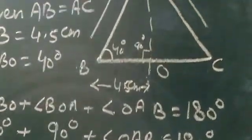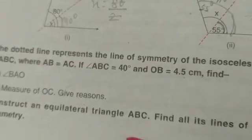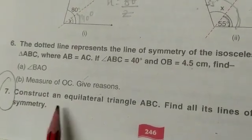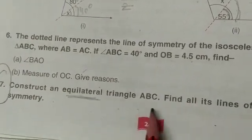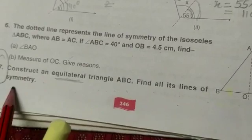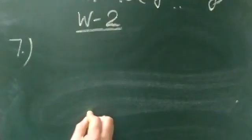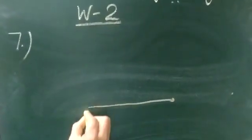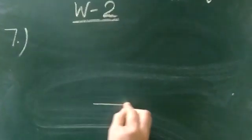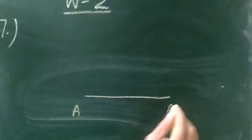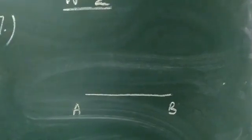After that, question number 7: construct an equilateral triangle ABC and find all its lines of symmetry. Equilateral means having three equal sides. To form the triangle, let us take a side of 4 cm. First we draw a line — take AB at any measure.